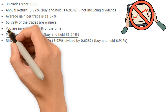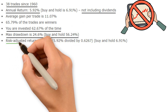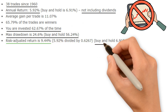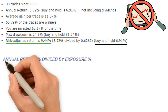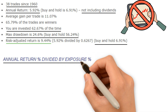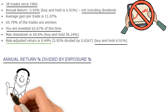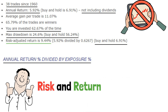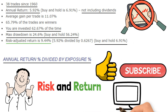Because you're invested only 63% of the time, we might argue that the risk-adjusted return is 9.4%, significantly higher than buy and hold of about 7%. We calculated risk-adjusted return by dividing the annual return by the time spent in the market. It's a simple formula, but we believe it's a very good proxy for risk and return. That's all for today and good luck trading and investing!